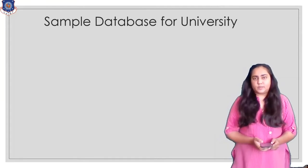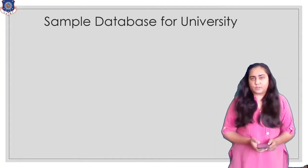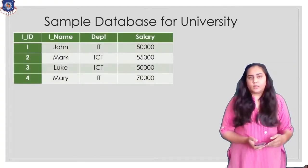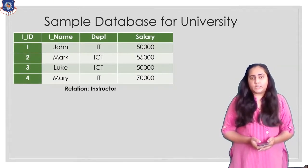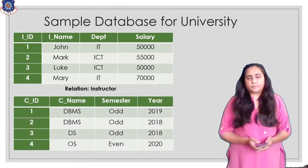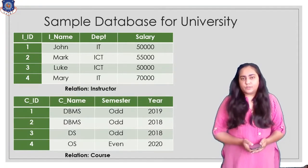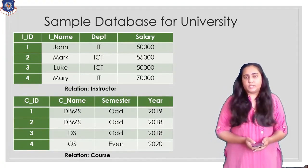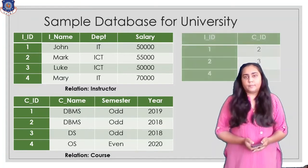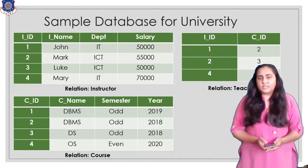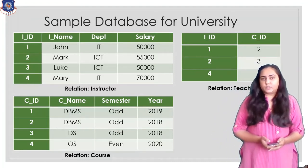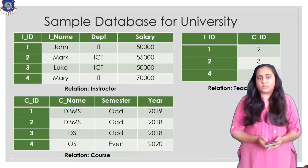Here you can see the sample database for a university. The first table is the instructor table, which contains the ID, name, department, and salary of the instructor. The second table is the course table, which contains the ID, name, semester, and the year in which the course was taught. The third table is the teachers table, which contains a relation between instructor and course.